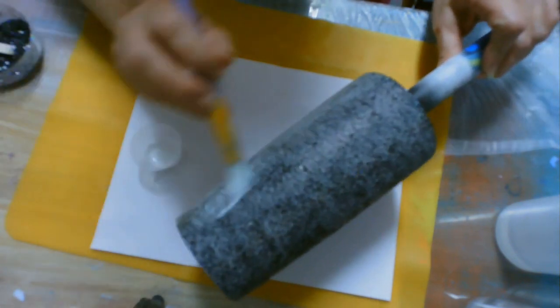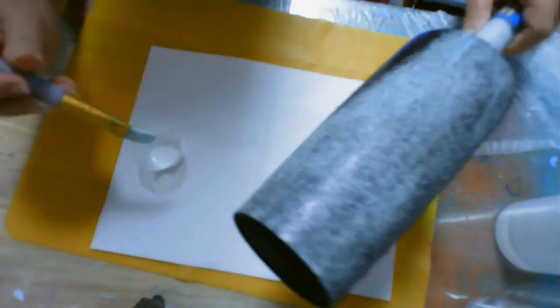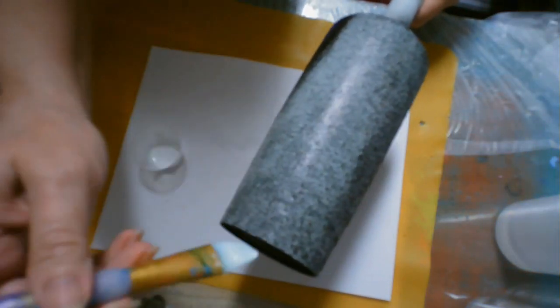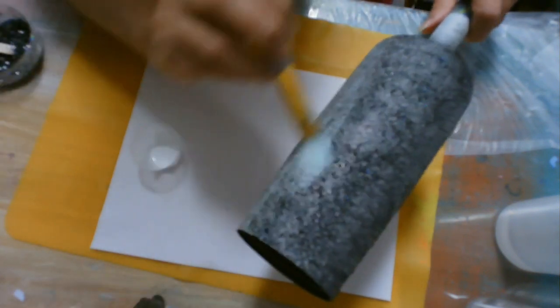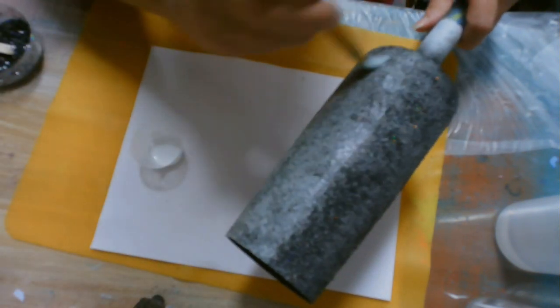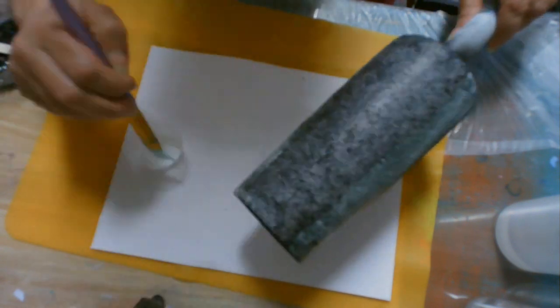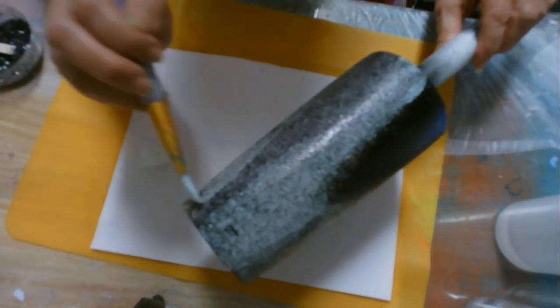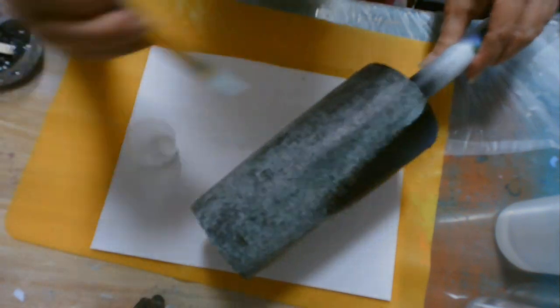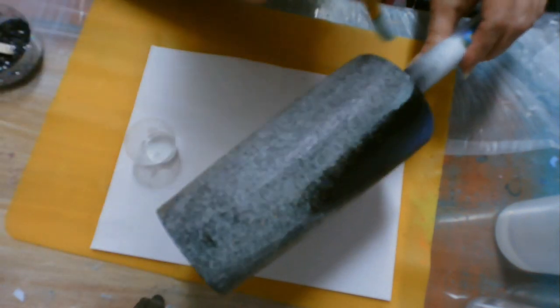So here I am adding another layer of the Tack-It. You can see you just smooth it on there and make sure that you have no lines. I did speed this up, and it does look like it's all white, but it won't once I get the next layer of glitter on there.